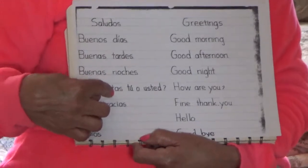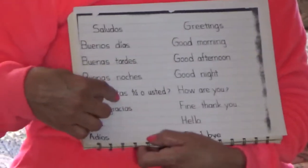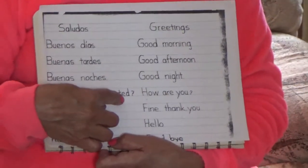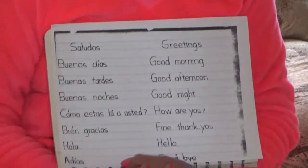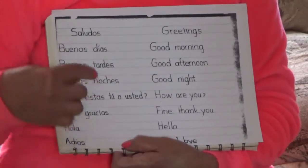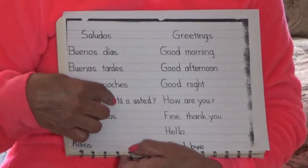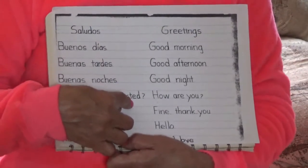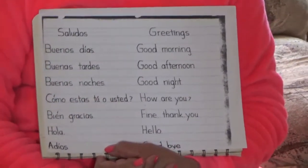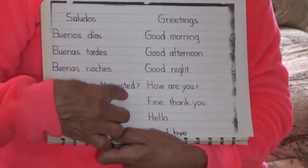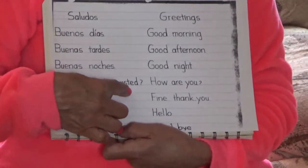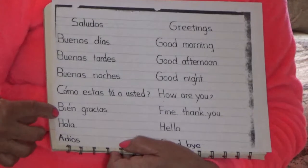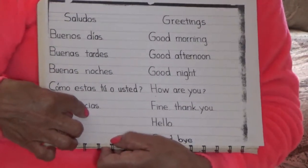Como estas? Now this is a little tricky. This is tú and usted, which both mean 'you.' In Spanish we have two forms of 'you': tú for someone your own age, and usted for respectful use, for an adult. If you're not sure which to use, I always prefer to use the respectful form, which is usted. Como estas means 'how are you.' Bien is good. Gracias — we know that — thank you.